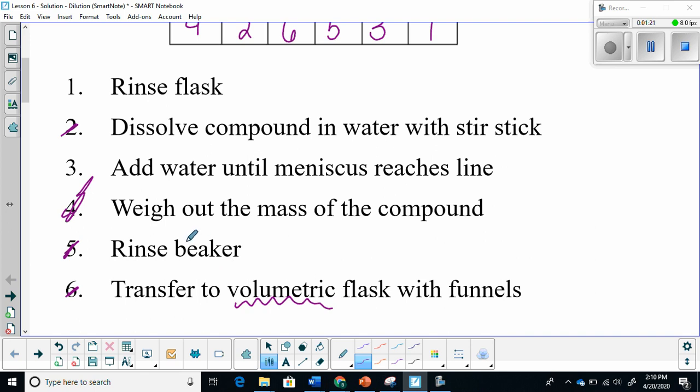You're going to rinse out all of the compound and make sure that it ends up in your volumetric flask. After the rinse, you are then going to add water until it reaches the meniscus, until that water level reaches that calibration line. And lastly, once everything is said and done, you will rinse your flask.